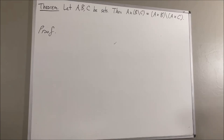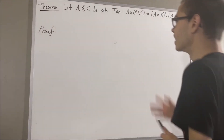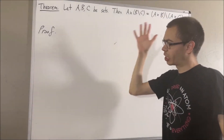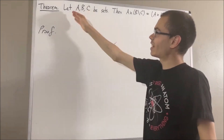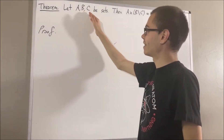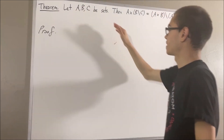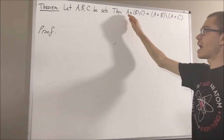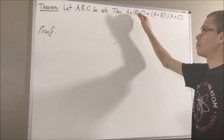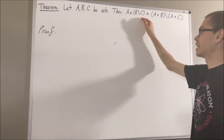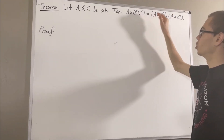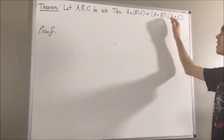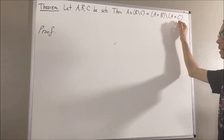Hello! In this video, we are going to prove the following theorem. Let A, B, and C be sets. Then, A times B set minus C is equal to A times B set minus A times C.